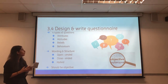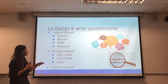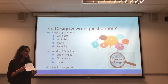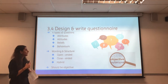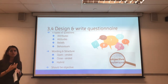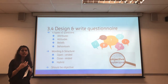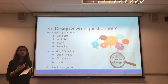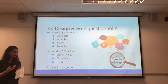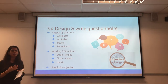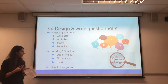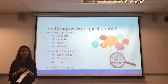The next step is to design and write the questionnaire. There are four types of questions: attributes, attitude, beliefs, and behaviour. Attributes are demographic questions such as the age group of respondents. Attitude is what they feel about the question, and beliefs are their opinions. The wording and structure of the questionnaire is very important so that respondents understand it. Questions can be open-ended, close-ended, or hybrid. Open-ended questions allow any answer, while close-ended questions have set options. To develop a good questionnaire, Orion developers should include both types, as some answers can be overlooked with close-ended questions alone. Surveys should always be objective to prevent bias from affecting the main objective.